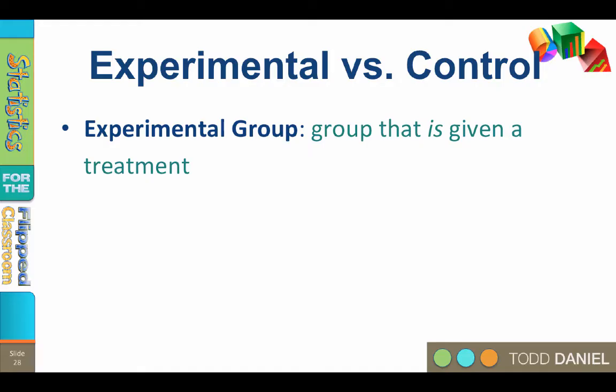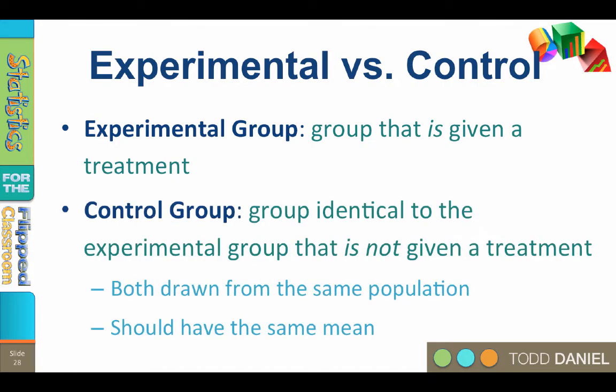Remember that when we draw a sample from a population, we expect that the mean of the sample will be the same as the mean of the population. But when we do an experiment, we typically draw a large sample, which we then randomly assign into two groups. The experimental group is the group that is tested or given a treatment, also known as the treatment group. The control group is a group identical to the experimental group, except that it is not given a treatment. Both groups are drawn from the same population, so they should have the same mean.